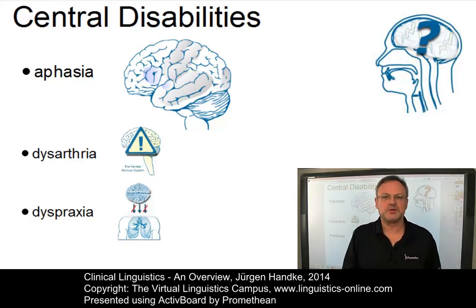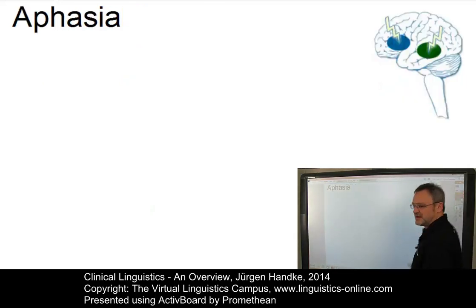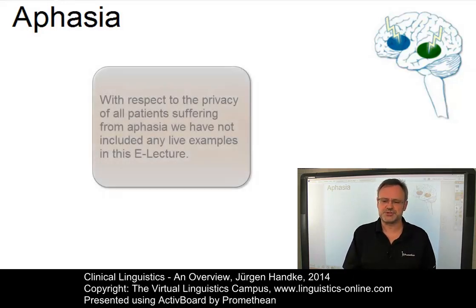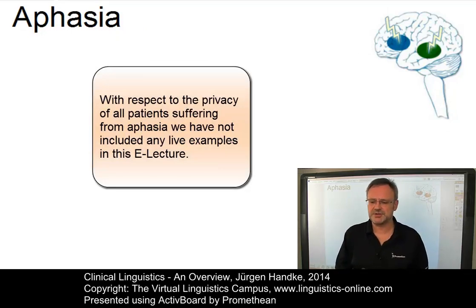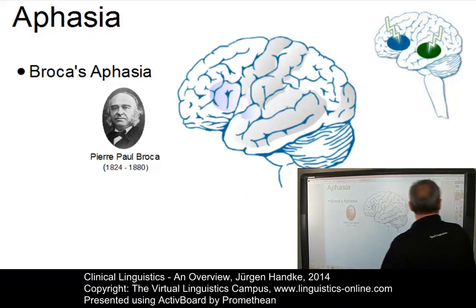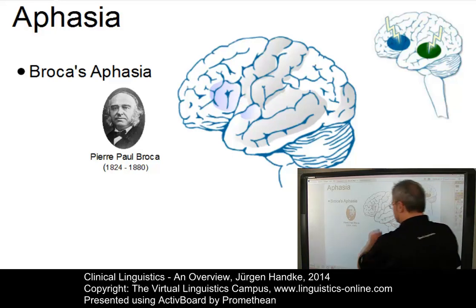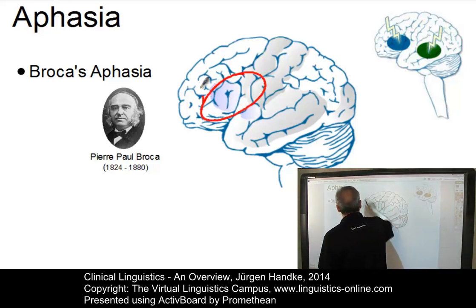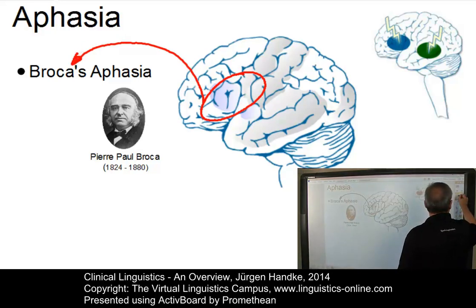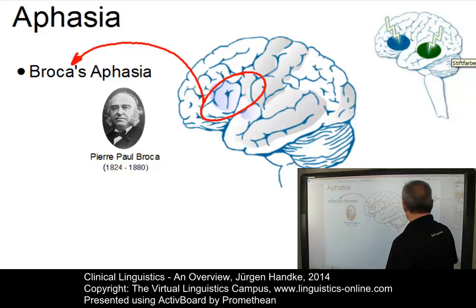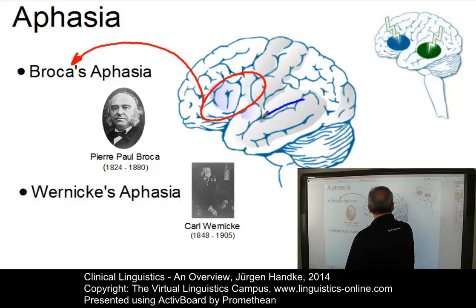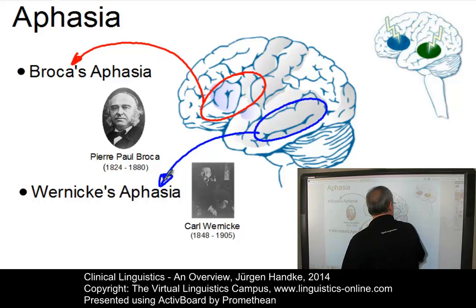Let us now concentrate on aphasia and look at it in more detail. Aphasia is a communication disorder caused by brain damage and it is characterized by complete or partial impairment of language comprehension, language formulation and use. There are several types of aphasia according to the location of brain damage. One of them is referred to as Broca's aphasia, named after the French physiologist Paul Broca, associated with a lesion in the frontal part of the human brain. The second type is Wernicke's aphasia, named after the German physiologist Karl Wernicke, associated with lesions in the posterior part of the brain.